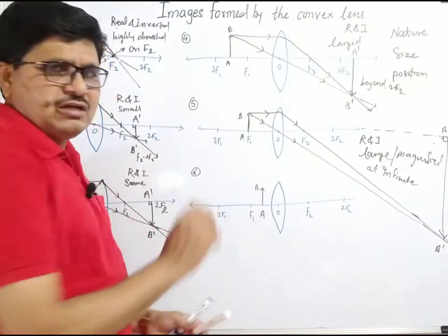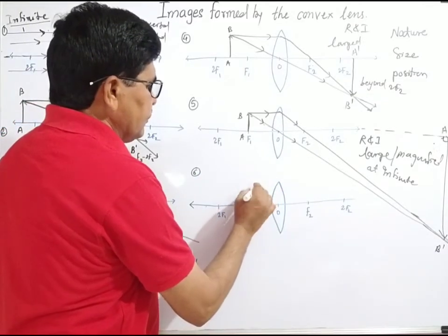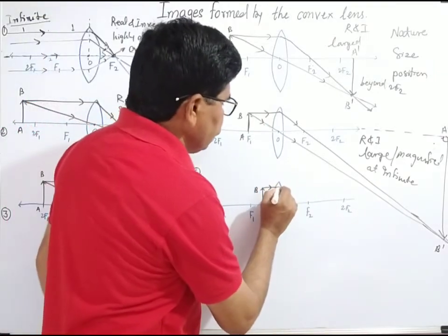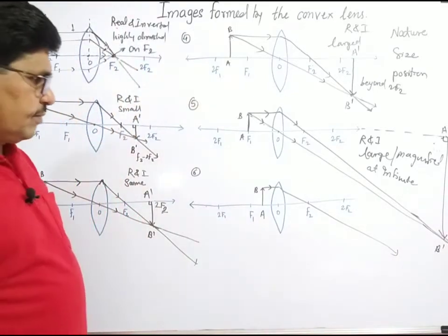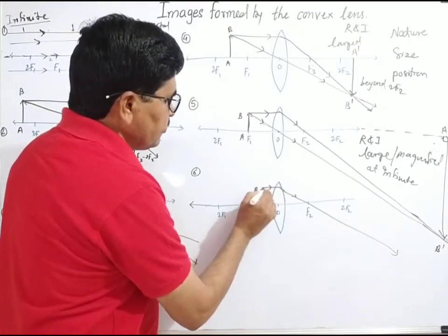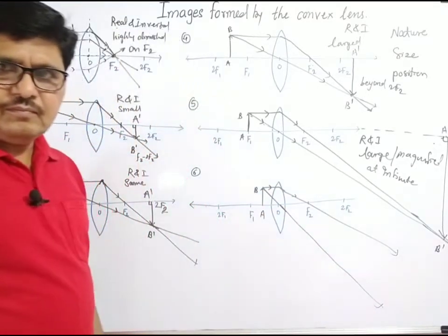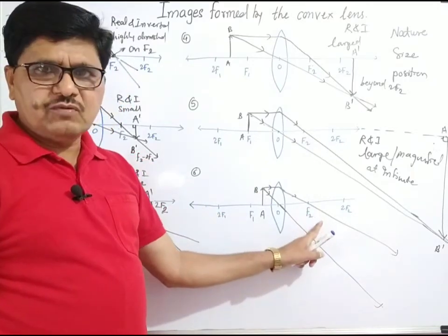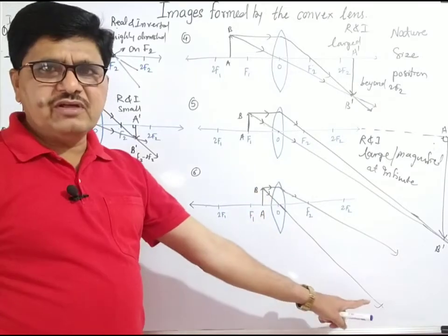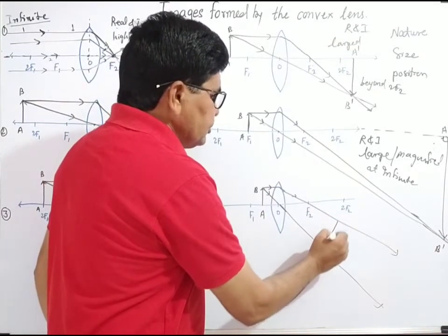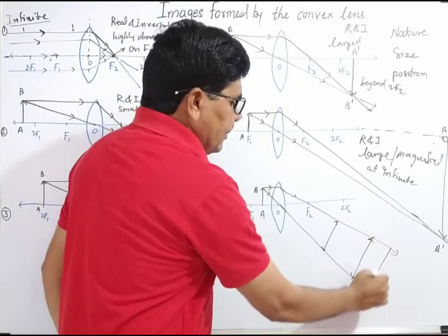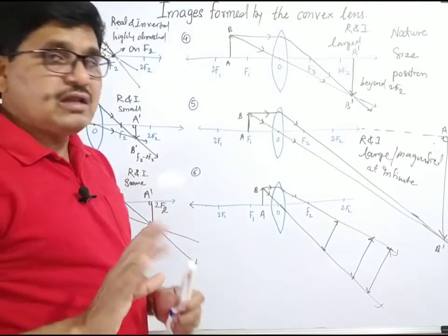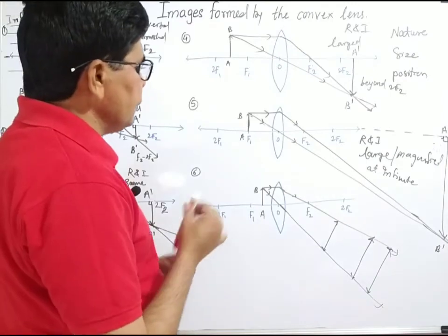Next, object is placed between the optical center and focus. Two rays are considered from that object. The first ray parallel to the principal axis, after refraction, passes through the focus. The second ray passes through the optical center without any deviation. When we compare the distance between the refracted rays, the distance goes on increasing, so there is no possibility of them meeting together at any point.